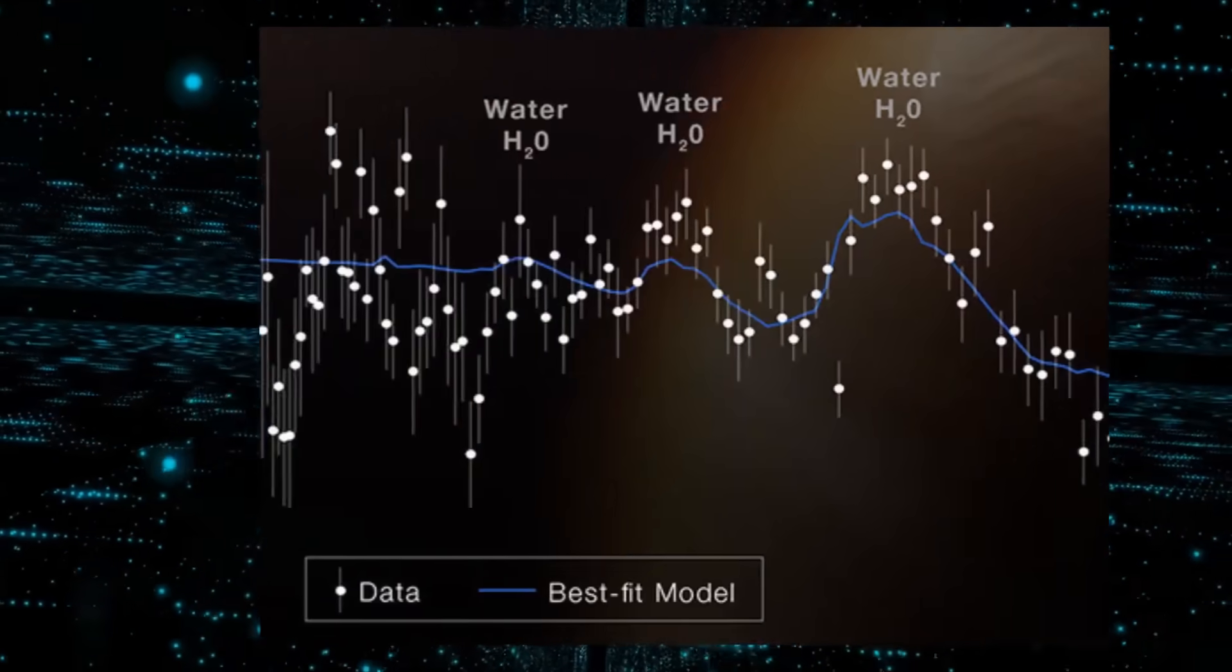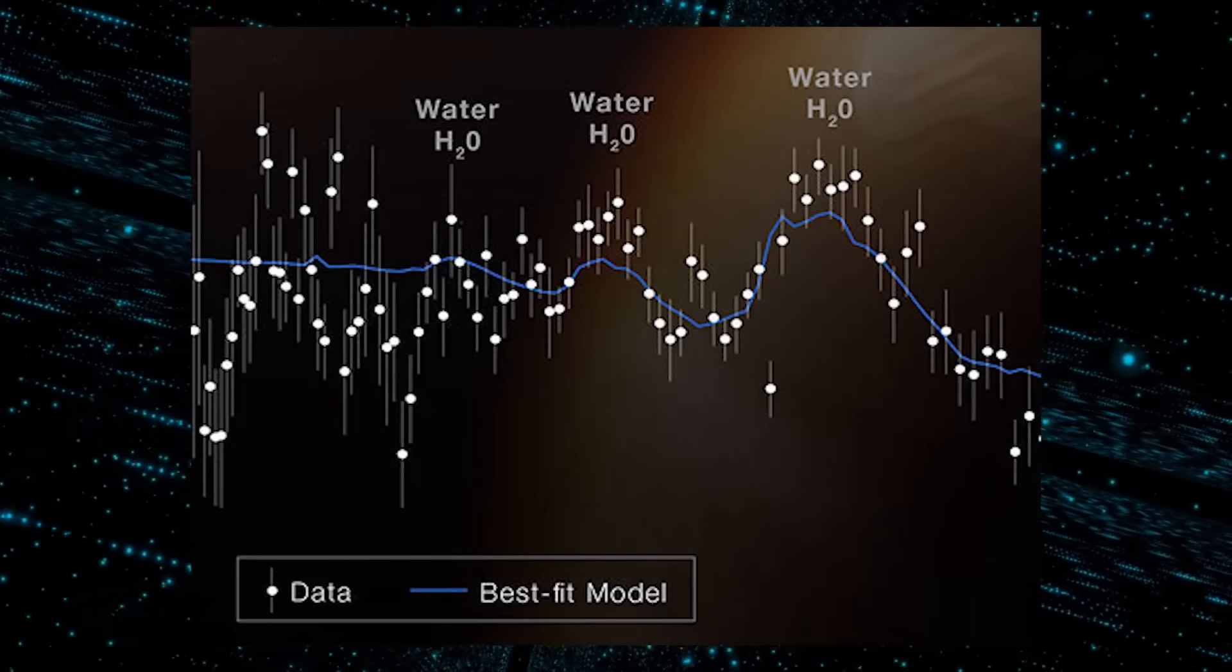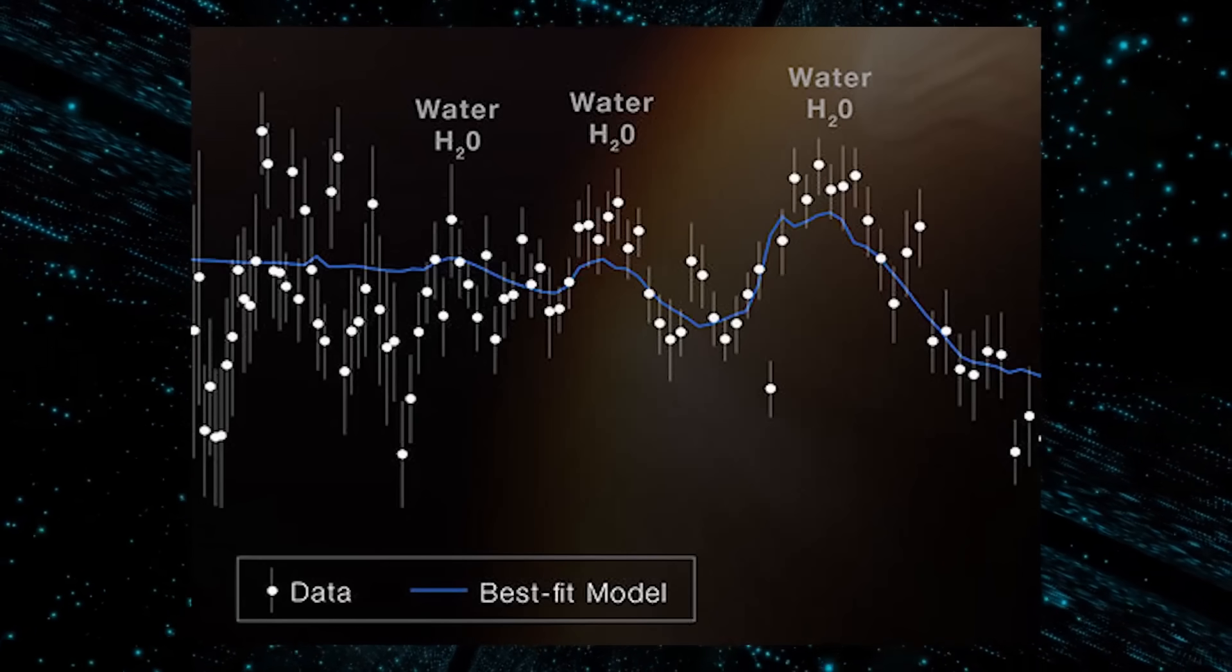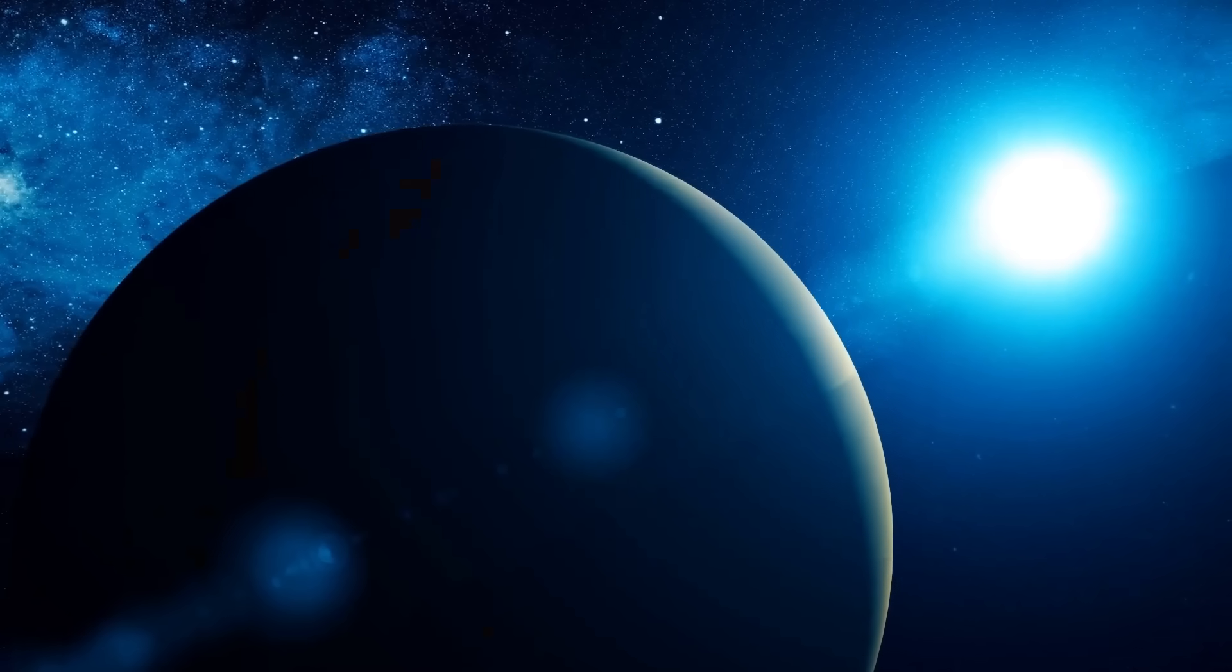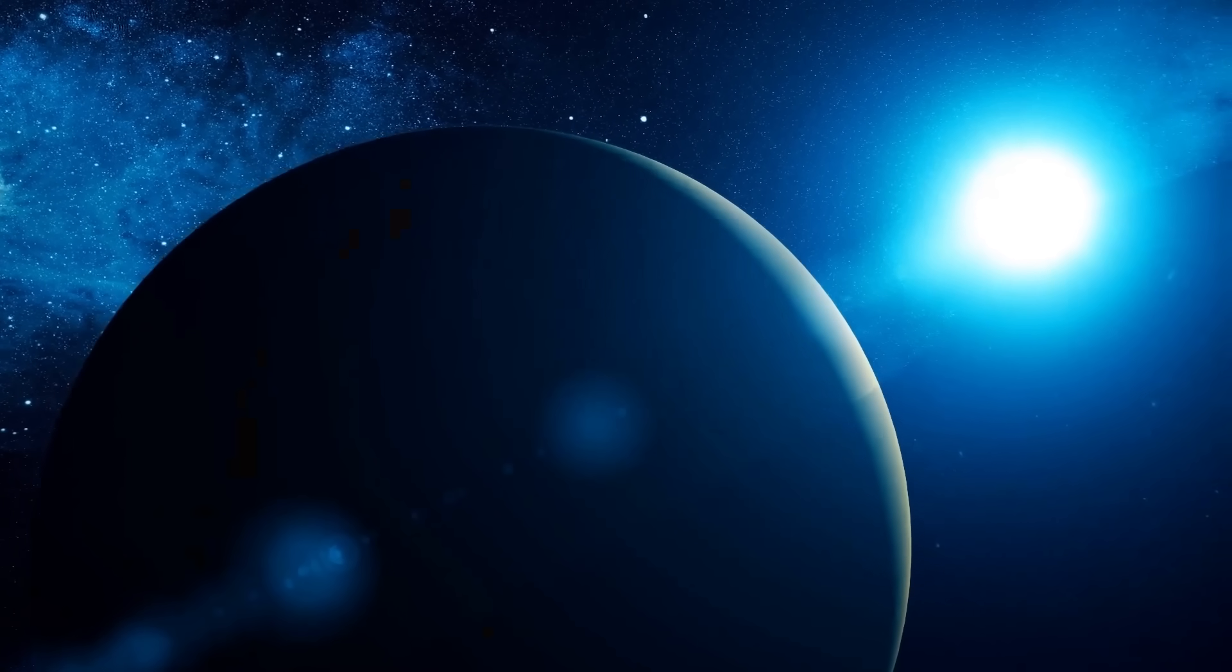The best-fit model, represented by the blue line on the graph, accounts for the data, the known characteristics of WASP-96b and its star, as well as the ascribed properties of the atmosphere.